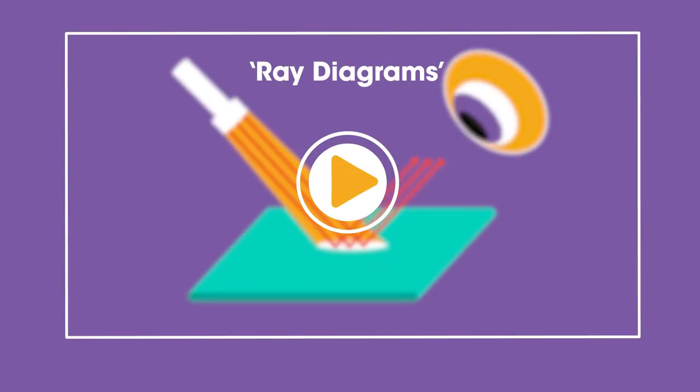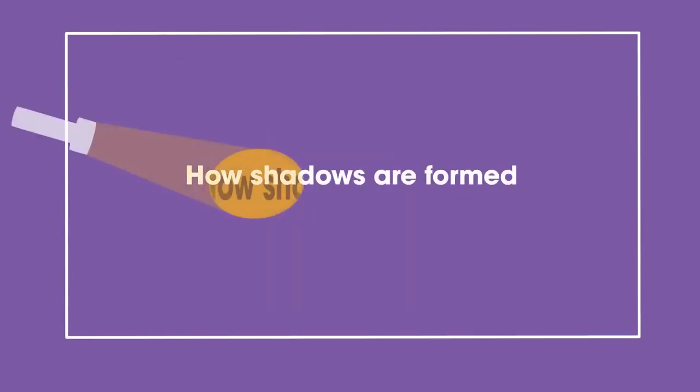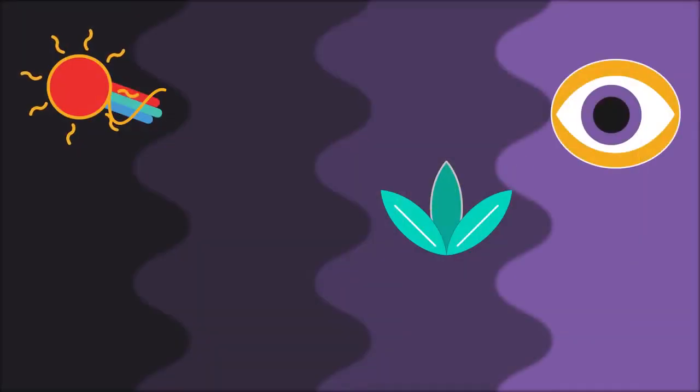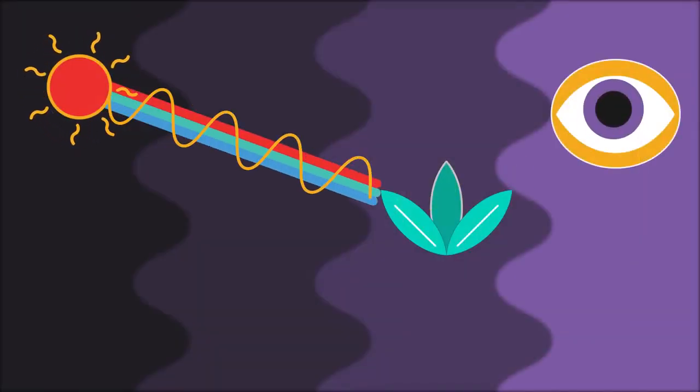In this video, we're going to learn about how shadows are formed. It's important to remember that light travels in straight lines.